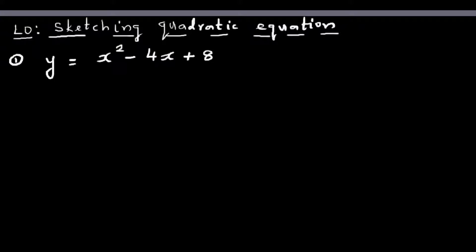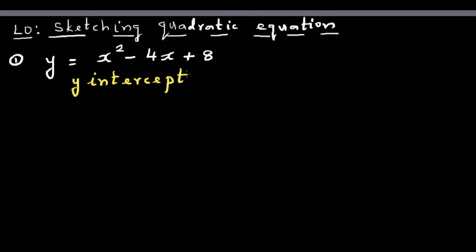In this video I want to go over sketching quadratic equations using the completing the square method. Here you have the first equation: y is equal to x squared minus 4x plus 8. The y-intercept is when x is equal to zero — so if you put x equal to zero, both the x terms become zero, so the y-intercept is 0 comma 8.